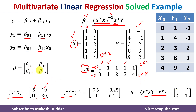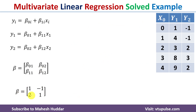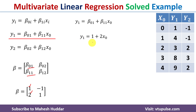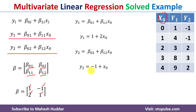Putting these values into the beta matrix: β = [1, -1, 2, 1]. Now we substitute into our two equations. For y1: β₀₁ = 1 and β₁₁ = 2, so y1 = 1 + 2x₀. For y2: β₀₂ = -1 and β₁₂ = 1, so y2 = -1 + x₀. This is how we find the multivariate linear regression equations for multiple dependent variables and one independent variable.